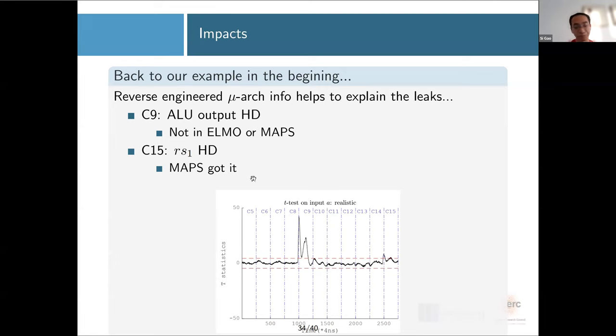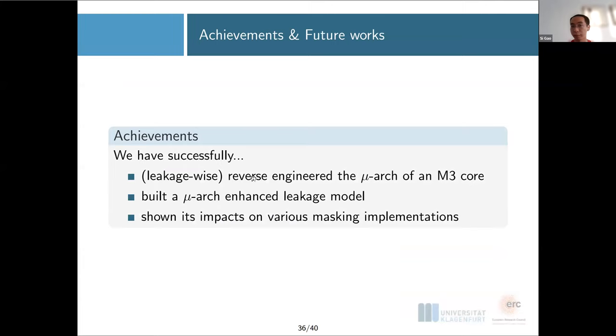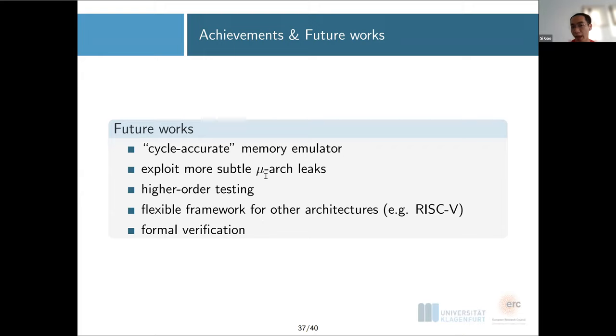Okay, so let's briefly summarize our achievements here. We have successfully, leakage-wise, reverse engineered the microarchitecture of our target M3 core. This is of course a leakage-wise reverse engineering. This is not even close to the binary code level, and we didn't really reproduce the M3 core that can be run on any device. We are building a microarchitecture-enhanced leakage model, and we have shown this impact on various masking implementations.